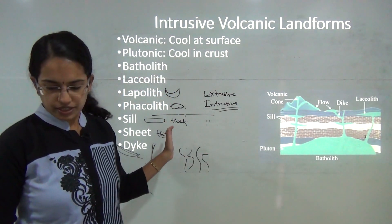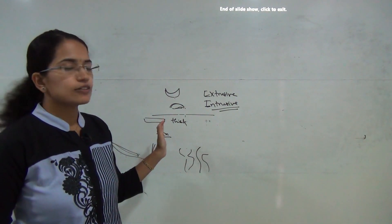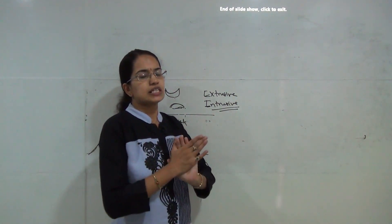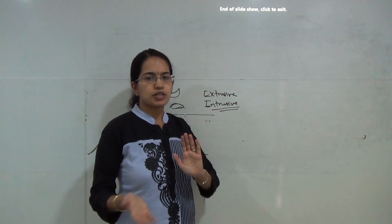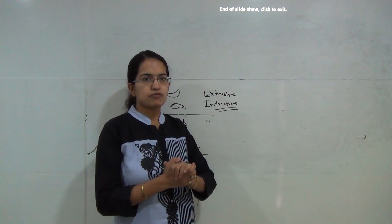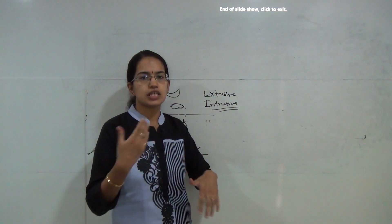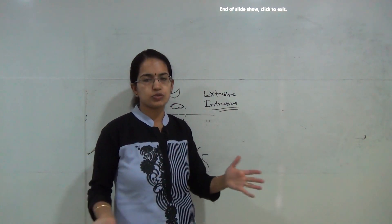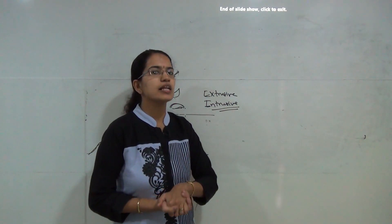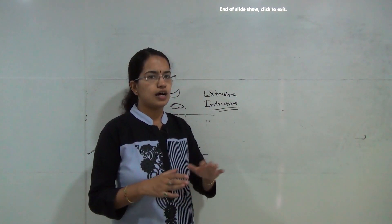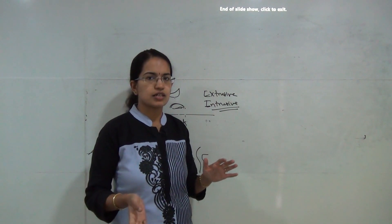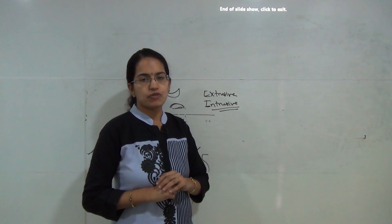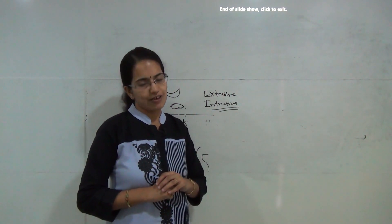With this we complete the coverage of volcanoes and Chapter 3. In the next class we will be talking about Chapter 4, which covers the origin of the earth and the distribution of oceans and land on the earth's surface. You can subscribe to our channel for more details. Have a good day.